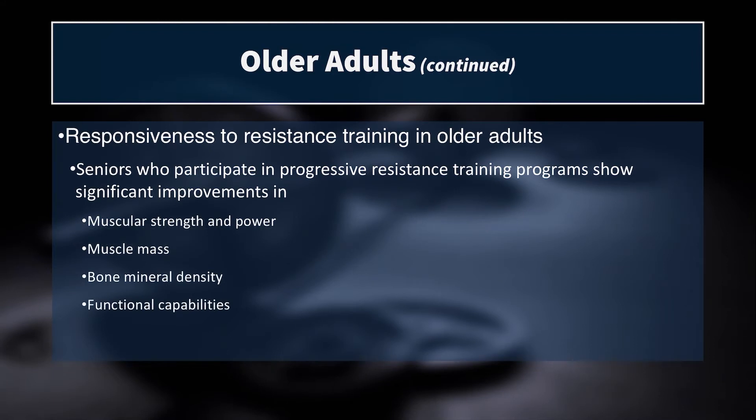Here's the responsiveness of older adults to resistance training. Seniors who participate in progressive resistance training programs can show improvements in all four of these areas: muscular strength and power, muscle mass, bone mineral density, and functional capabilities. I mean, this is incredible. You can get octogenarians into the weight room who have never touched a weight in their lives — men and women — and get them on an adaptive strength program, and the results are incredible.